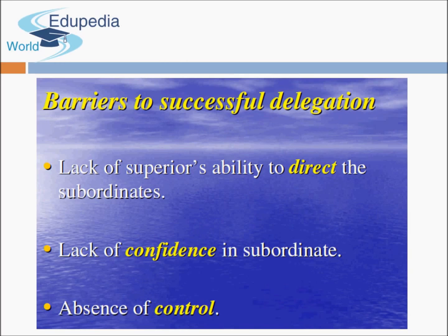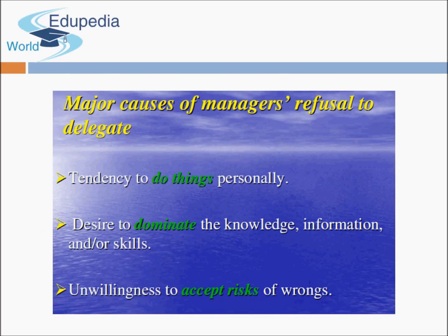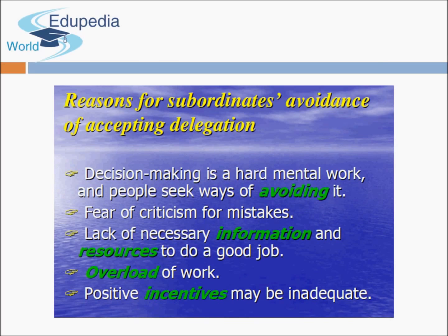Barriers to successful delegation include lack of the superior's ability to direct subordinates, lack of confidence in subordinates, and absence of control. Major causes of managers' refusal to delegate include tendency to do things personally, desire to dominate, and unwillingness to accept the risk of wrong decisions. Reasons subordinates avoid accepting delegation include viewing decision-making as hard mental work, fear of criticism, lack of necessary information, overload of work, and inadequate positive incentives.